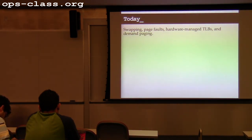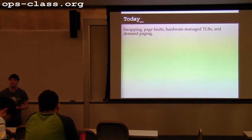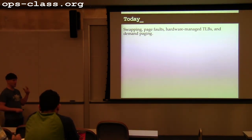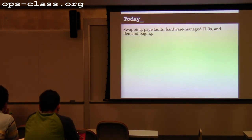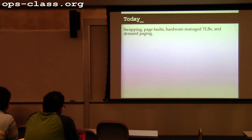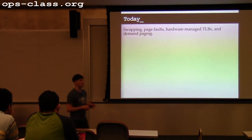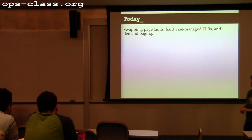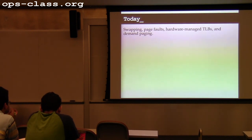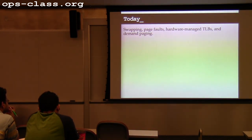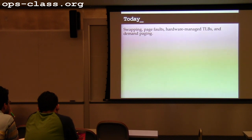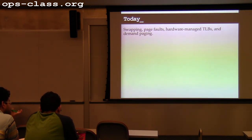Today we're going to look through the mechanics of swapping — exactly what the operating system needs to do to move a page out, which will be a good review of virtual addressing and MMU concepts. Then we'll talk about different types of page faults, introduce hardware-managed TLBs, which are common because the x86 uses this architecture, and talk about procrastination as a useful technique for the OS when dealing with process memory requests.